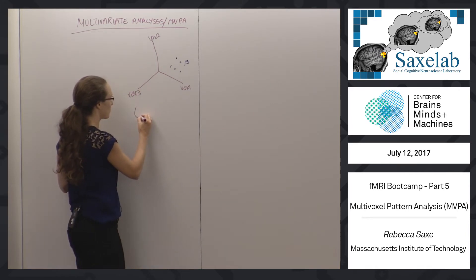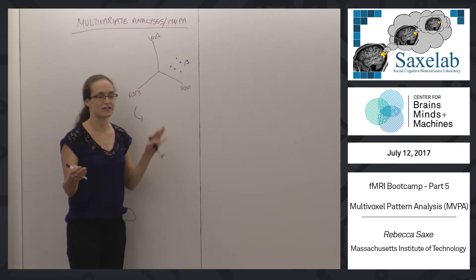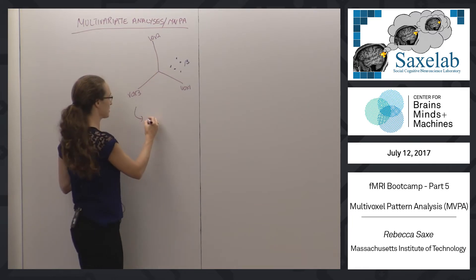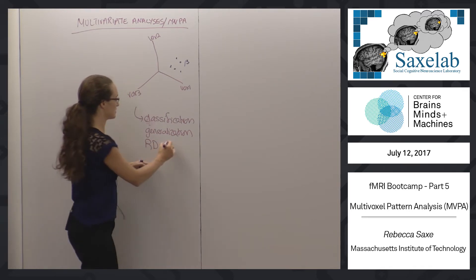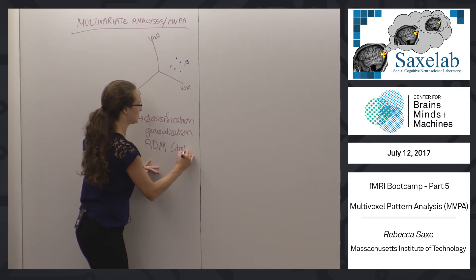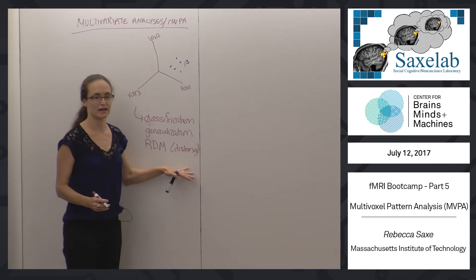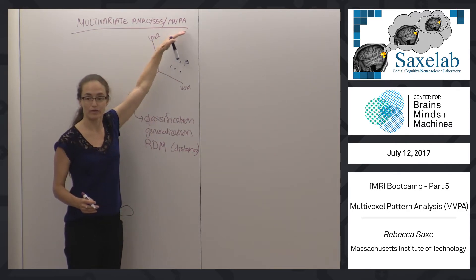What we're going to talk about today are things you can do from here. We'll go over classification again a little bit, then we'll talk about generalization, and then we'll talk about representational dissimilarity matrices. So all things which, as we said, are based on distance - these are all things that you can do with the data once you've thought about them in this form.